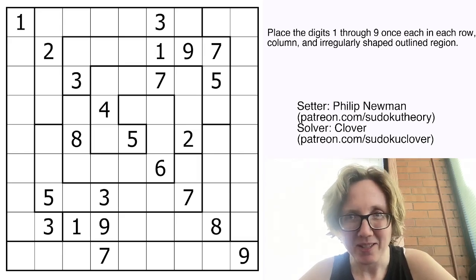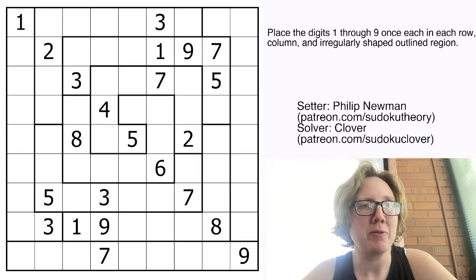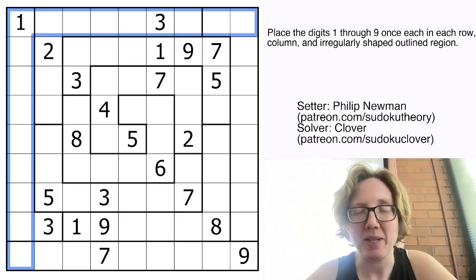So let's take a look at this one. So this is an irregular Sudoku, and that means we have normal Sudoku rules for rows and columns. So we're still placing one through nine once each in each row and each column.